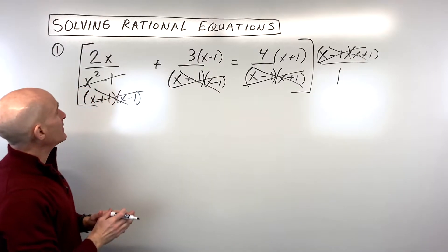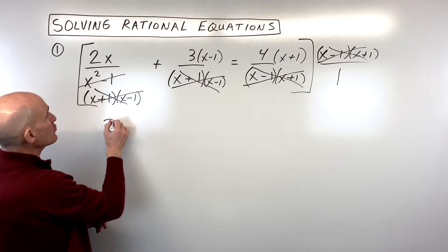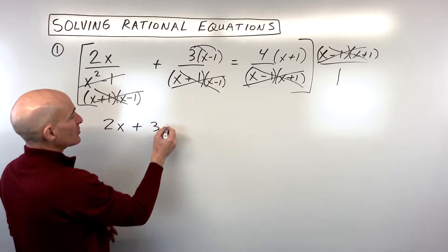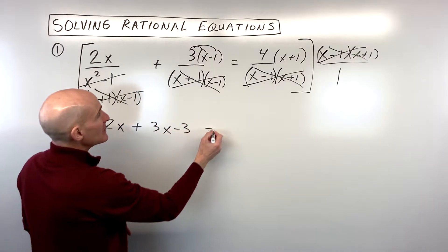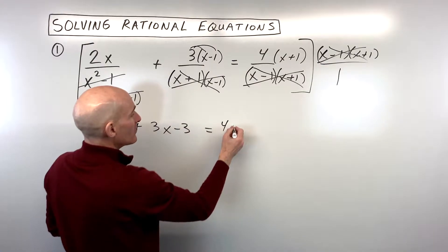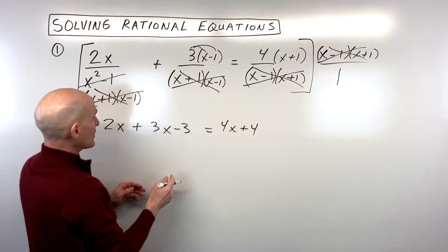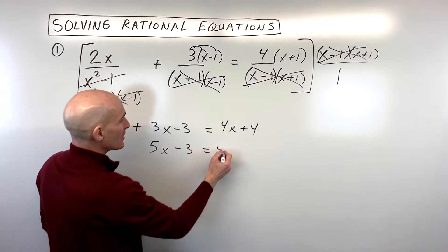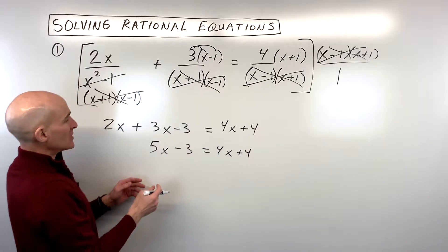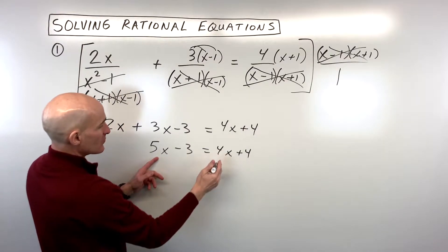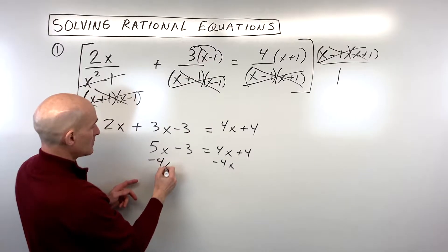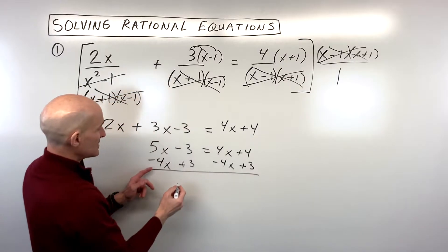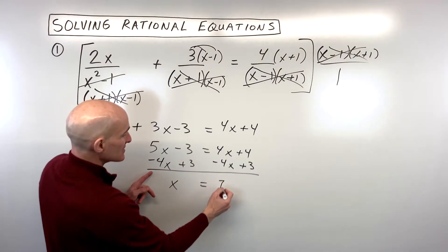Now it's a lot easier to solve because we're just left with the numerators, which gives us 2x plus 3x minus 3 equals 4x plus 4. Now let's go ahead and solve — it's just like a normal, easy algebra equation. We're going to subtract 4x from both sides, then add 3 to both sides. And now you can see this comes out to 1x is equal to 7.